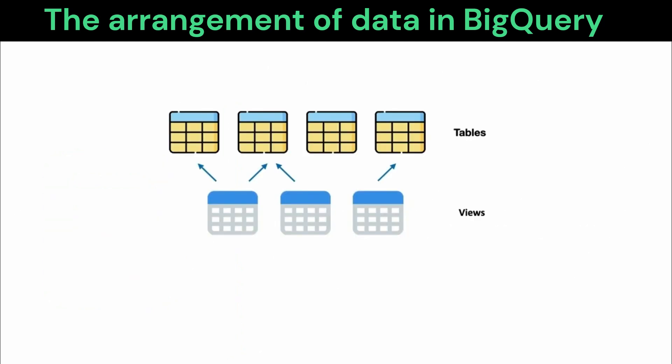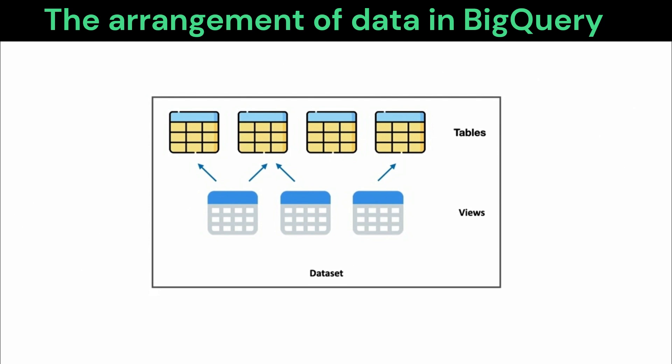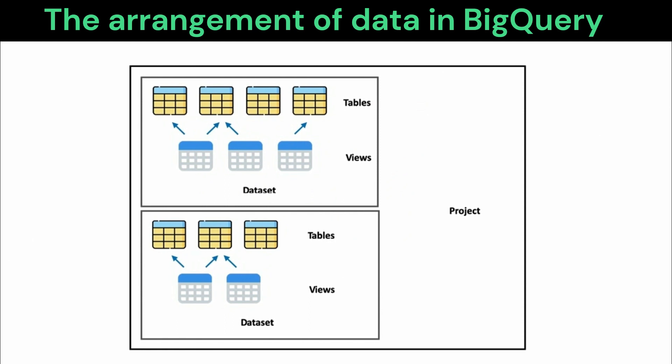Now that we have an understanding of the different types of views in BigQuery, we know that data can be accessed either via views or by querying tables. It is likely that you will end up with a number of related tables and views, and to group these together, BigQuery offers a construct called a dataset. Datasets in turn can be grouped together into a GCP project.